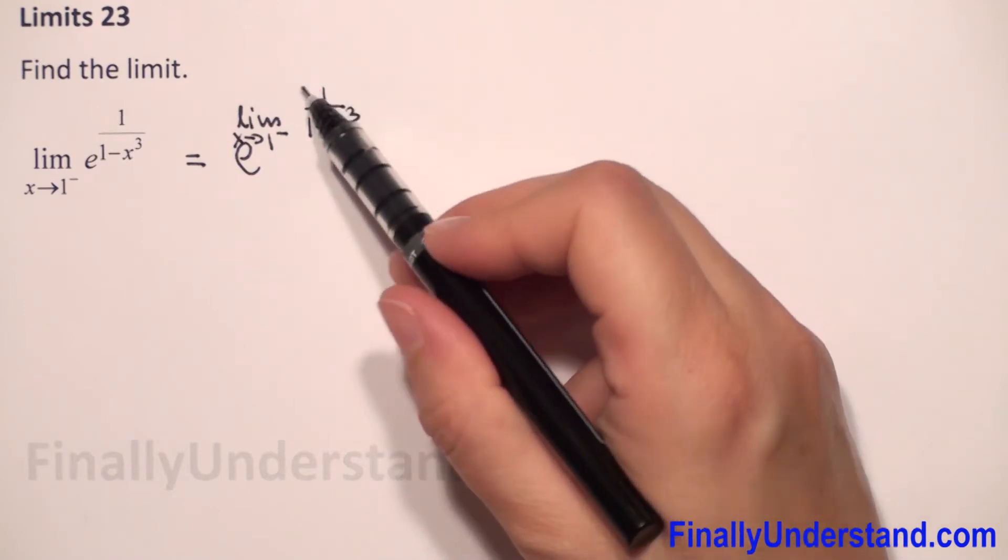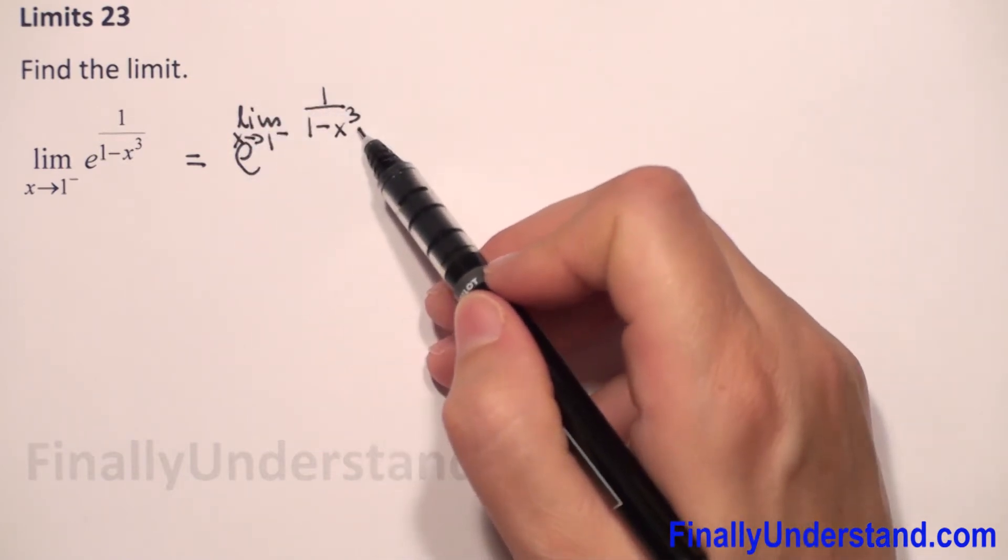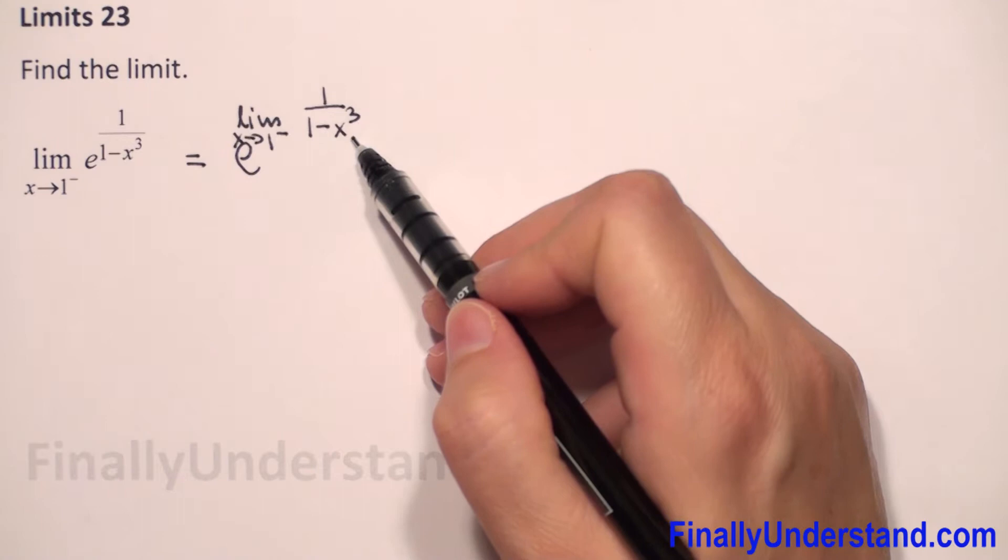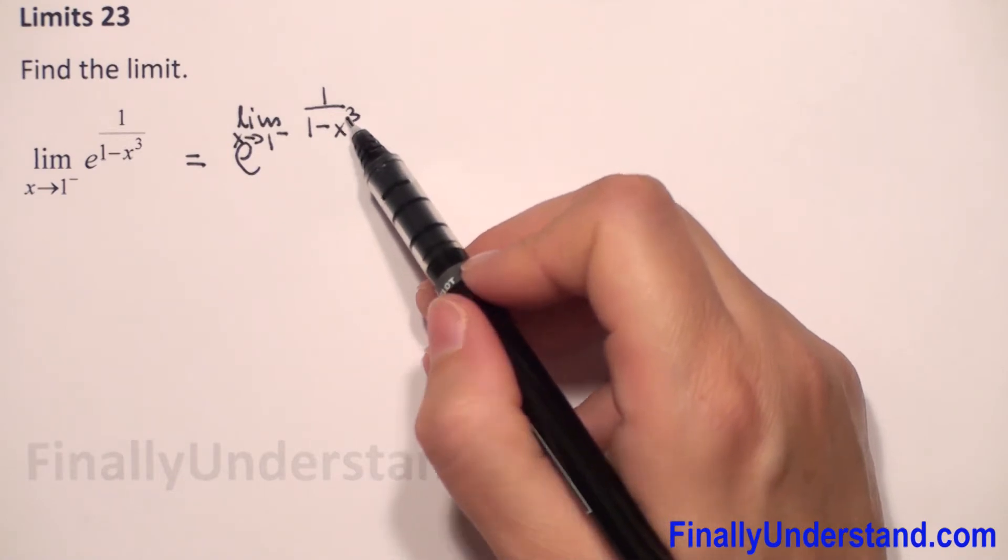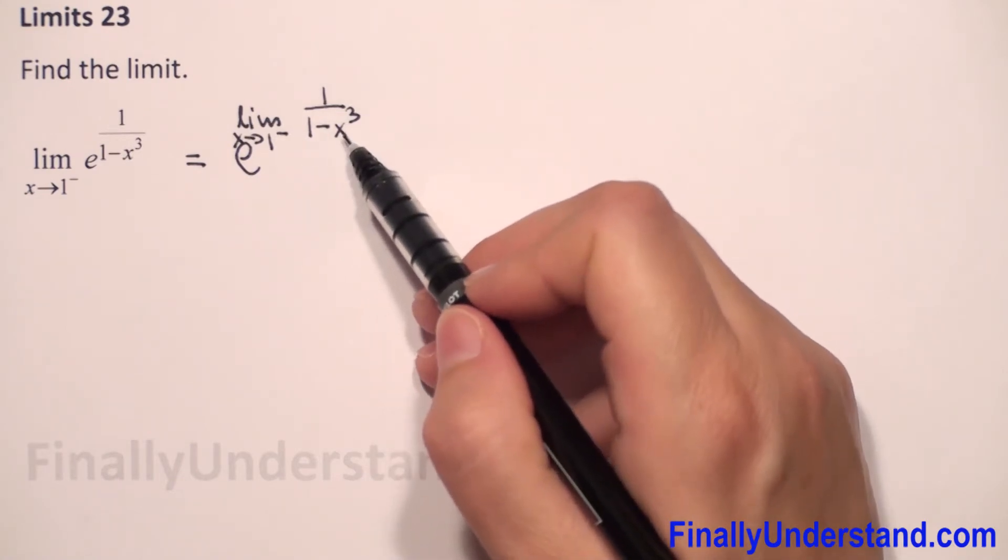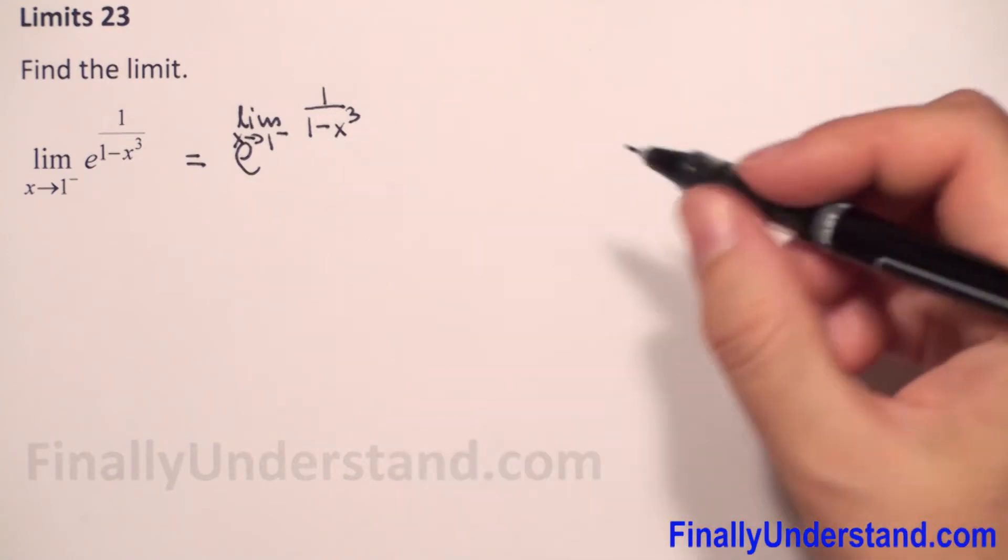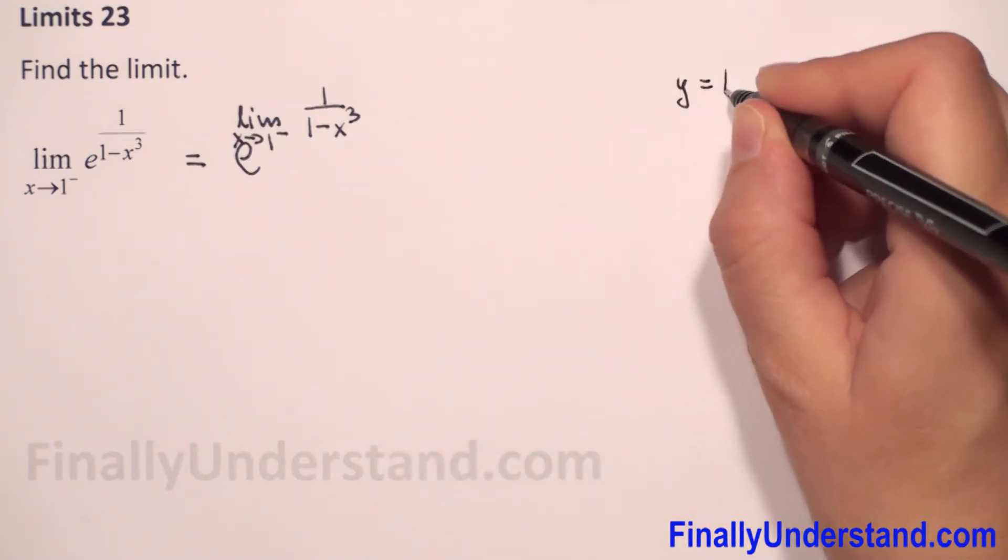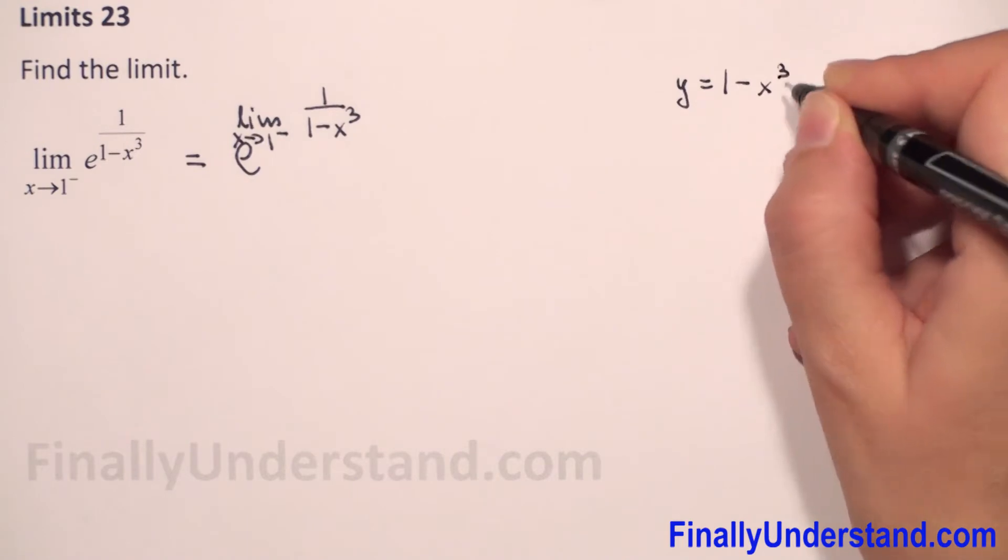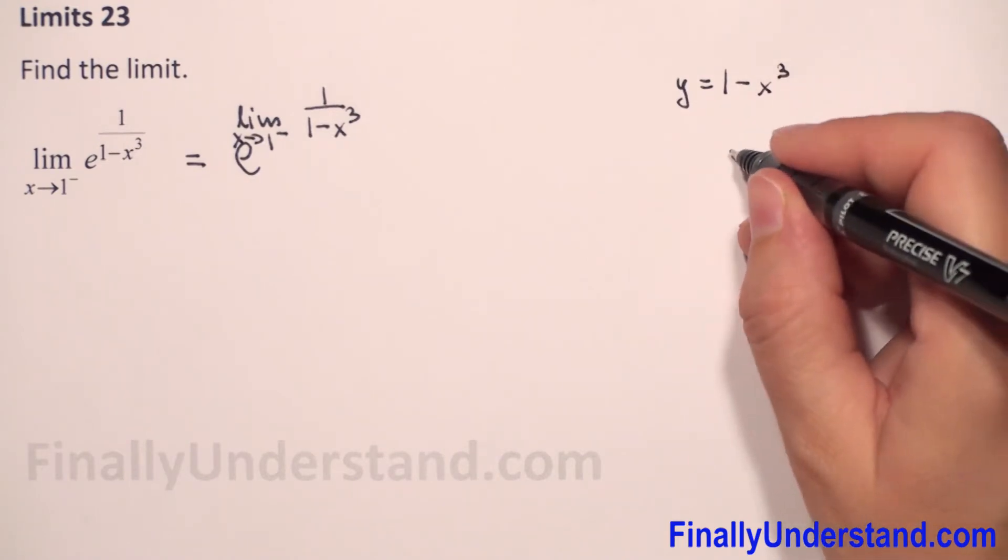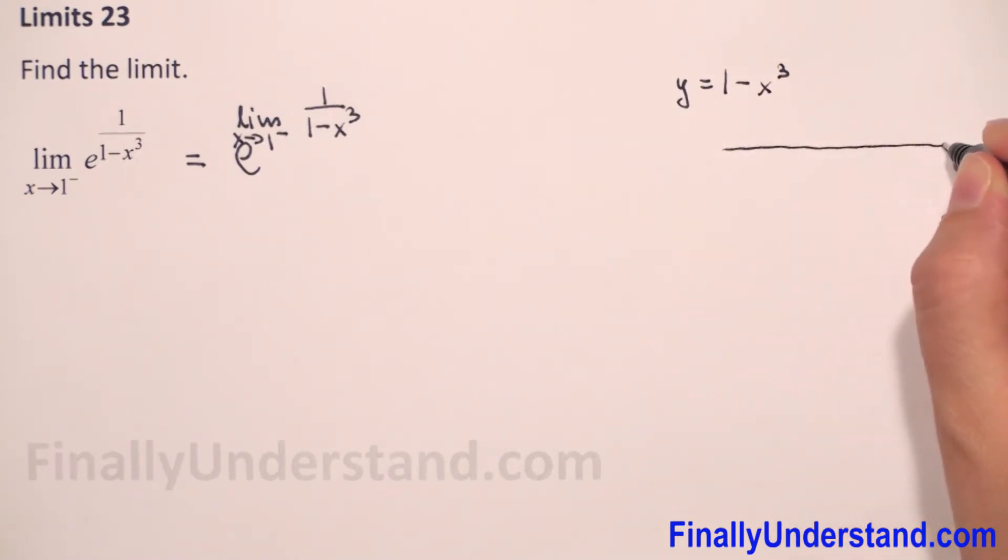We need to find only this limit. Like always, we will draw the graph of the function which is in the denominator. In the denominator we have the function one minus x to the third. So let me draw this x-axis.